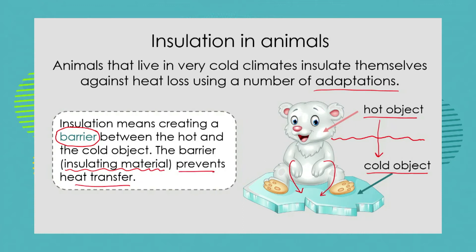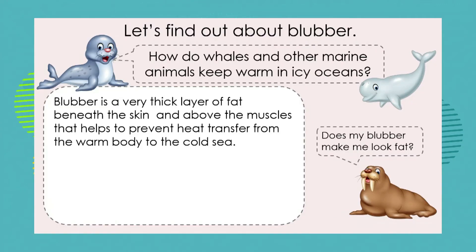We have to see what is the barrier between the body of the polar bear and the ice. There are a number of adaptations and we're going to look at two of them today: something called blubber and something called fur. Let's start off learning all about blubber.